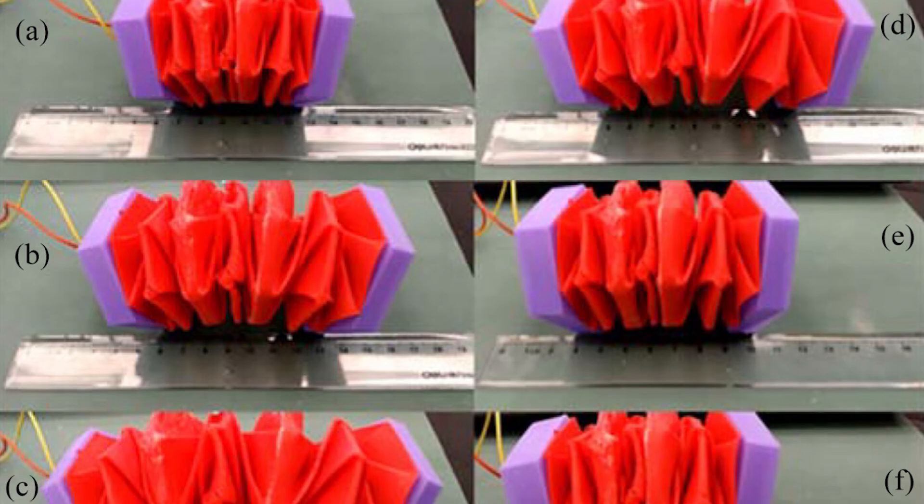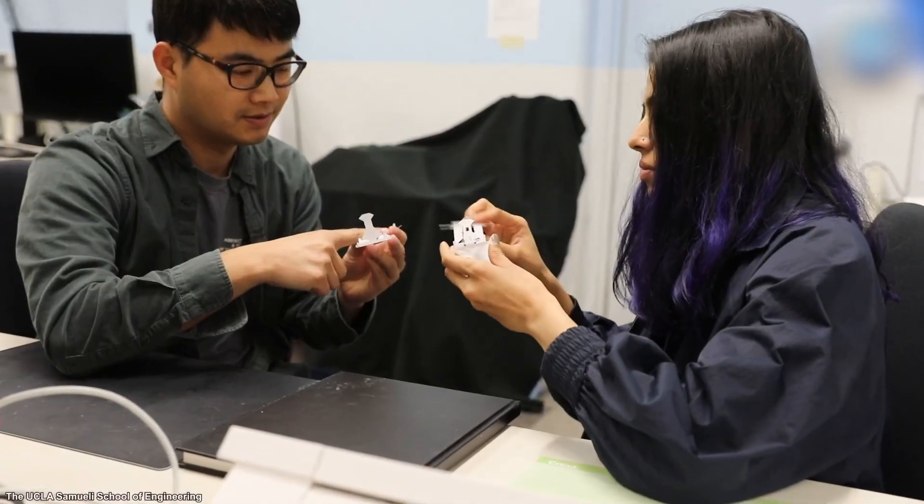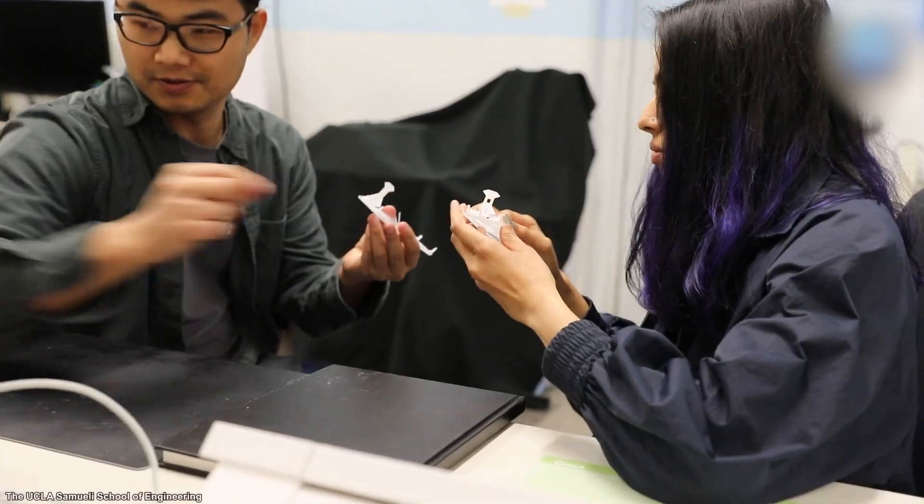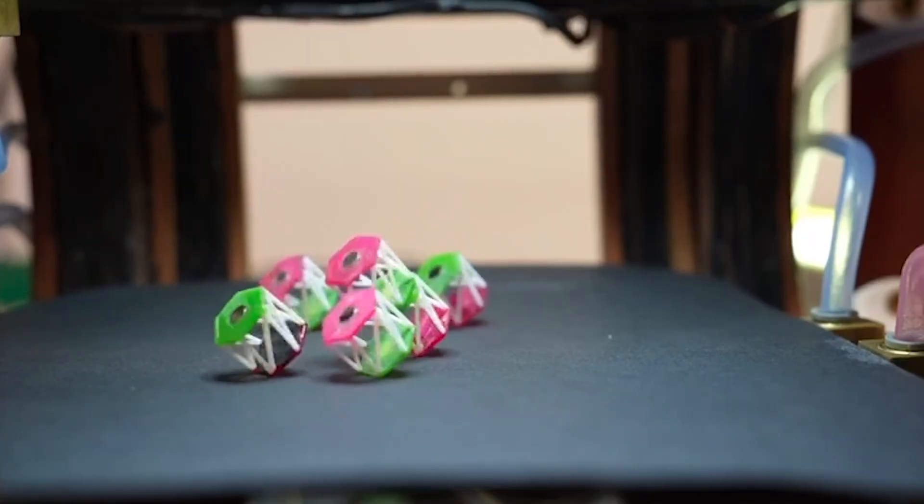One of the most immediate hurdles is scale. In lab settings, these origami-inspired metamaterial bots are small, controlled, and usually built manually or semi-manually. That's ideal for experiments and visual proofs of concept, but totally impractical for deploying in large-scale scenarios.